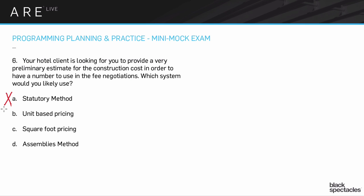So the potential answers are B, C, or D. And again, this is one of those ones where you want to look through the question and see what are the key pieces of information. It may not seem like it's that key, but one of them is 'hotel,' because a hotel is a very particular kind of typology.